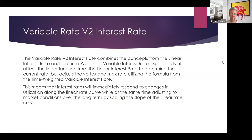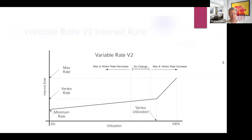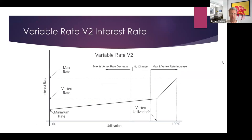The Variable V2 model is easiest to explain with a picture. You see the same two lines — one flat, one steep — exactly as in Aave or Compound. But you add the time-weighted model on top. When you are within a certain utilization ratio range, there is no change in the minimum rate.